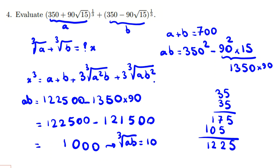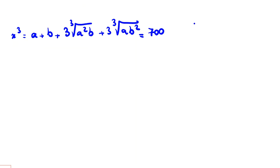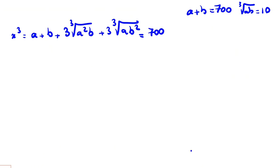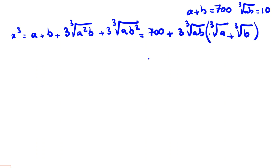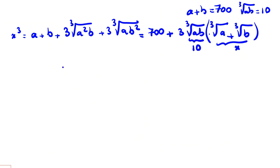Now we can use: x cubed equals a plus b plus three times the cube root of ab times the quantity cube root of a plus cube root of b. We know a plus b is 700, and cube root of ab is 10. Factoring, that cube root of a plus cube root of b is x, so we get x cubed equals 700 plus 30x, which gives us x cubed minus 30x minus 700 equals 0.